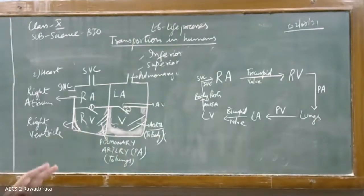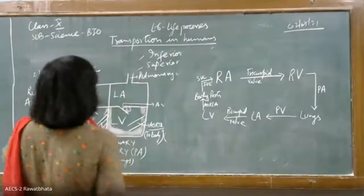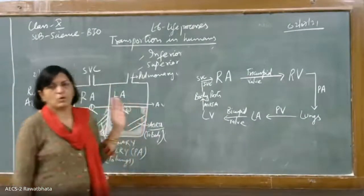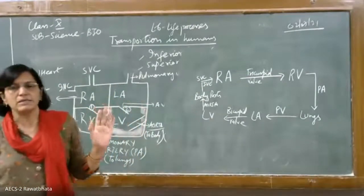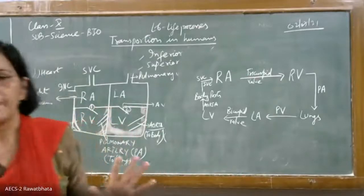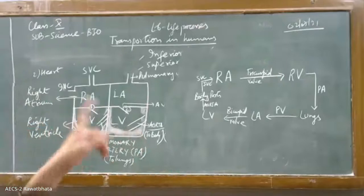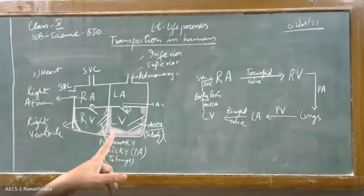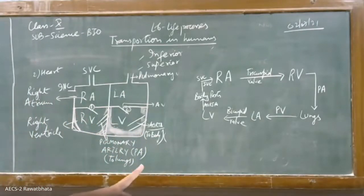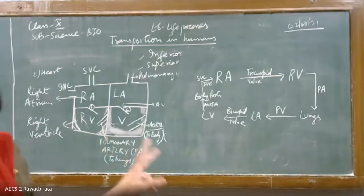Because blood flows twice through the heart, we call it double circulation — first circulation on the right side, second circulation on the left side. This is a two or three mark question, and you may be asked to draw the ray diagram showing the circulation of blood in the human heart.